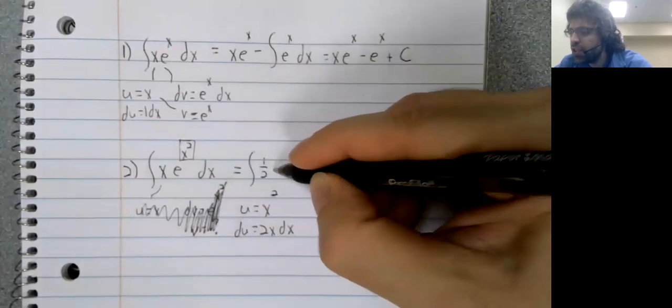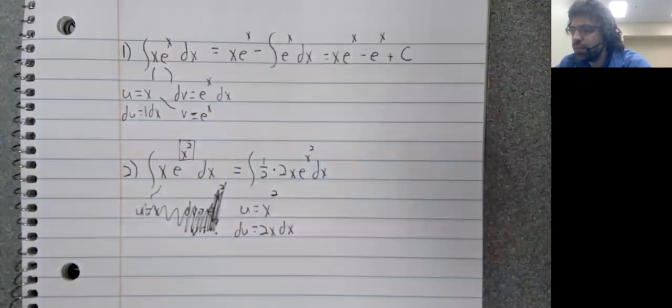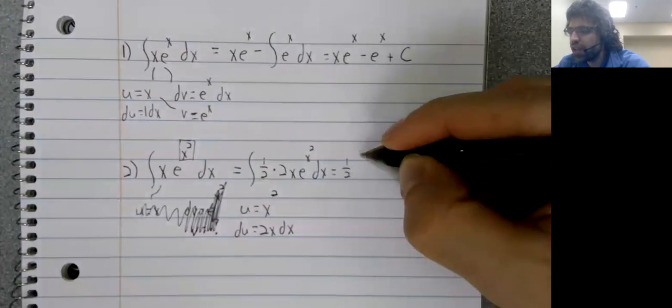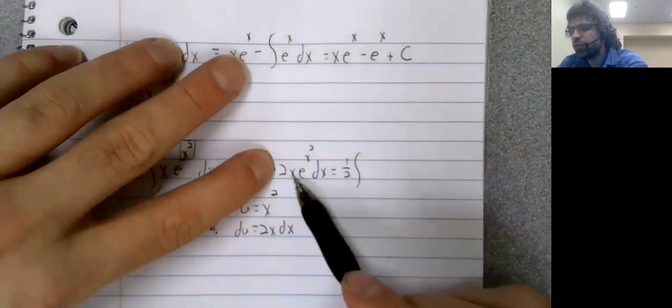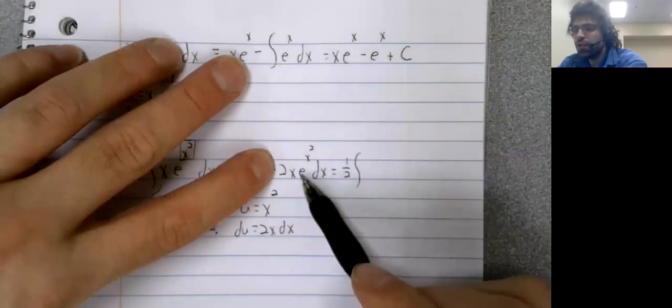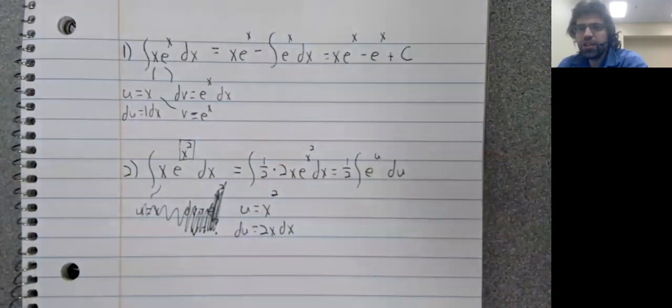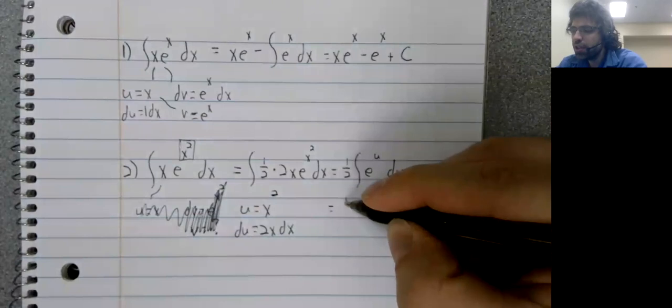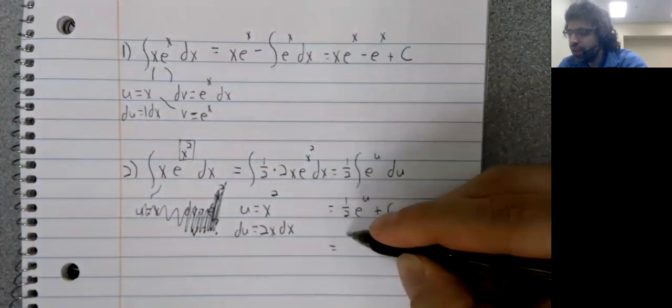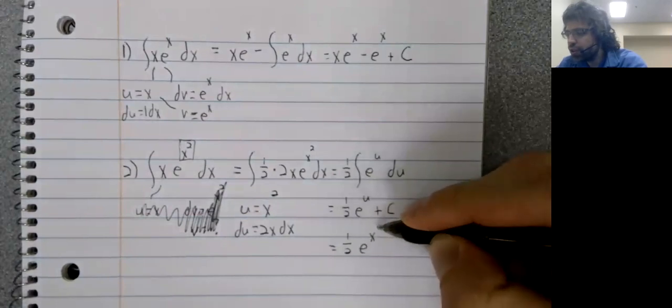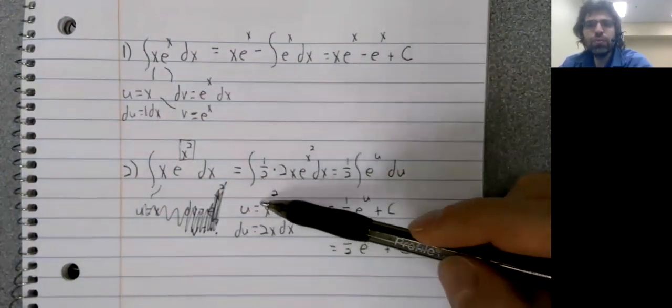We'll put in the two that we need. We, of course, also put in that one half because we don't want to change the integral. And now this 2X DX will be DU. This will be E to the U. The integral of E to the U is E to the U. Of course, we don't want a U in our final answer. U is X squared.